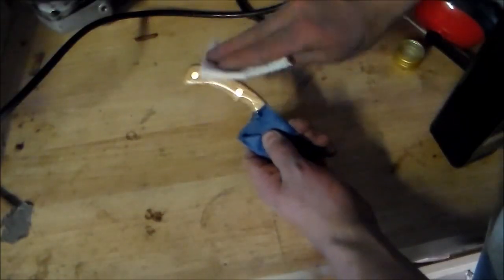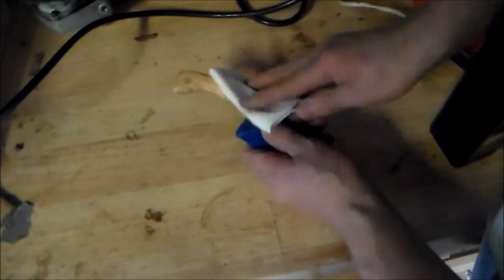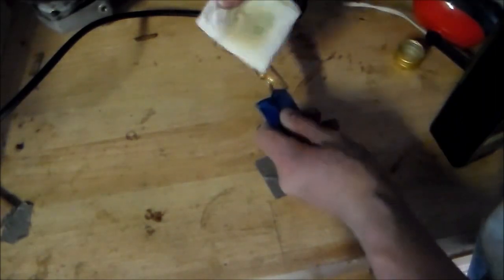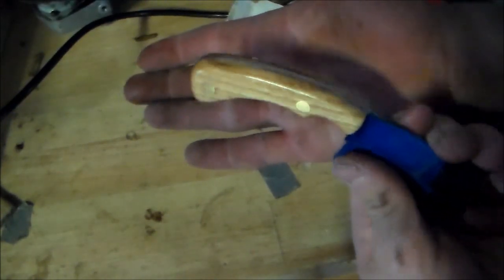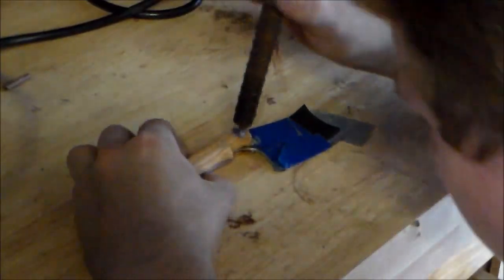Now I put some olive oil on the handle to protect it and bring out the grain, but the handle wasn't really anything to write home about, it was meant to be a sturdy shovel handle, not a good looking knife scale. But again, it turned out alright in the end.